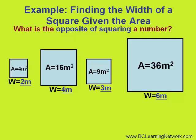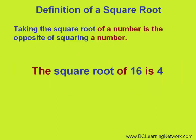What is the opposite of squaring a number? It is called taking the square root of a number. The square root of 16 is 4. The square root of 36 is 6.